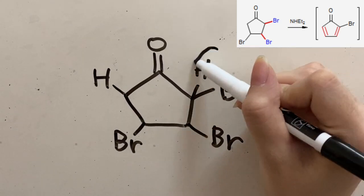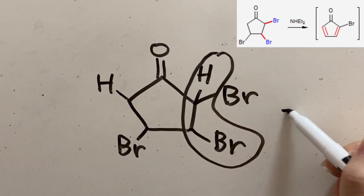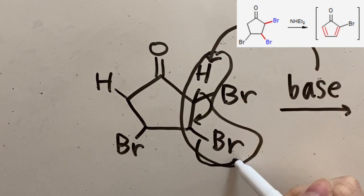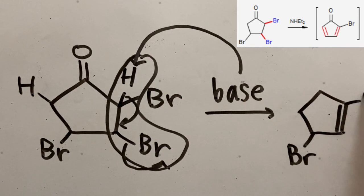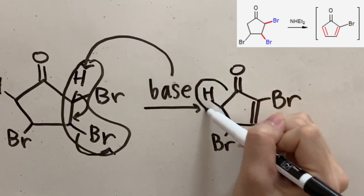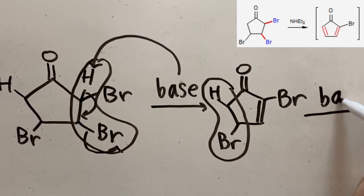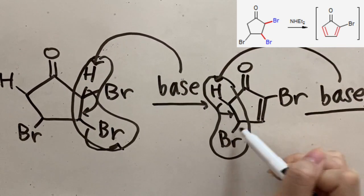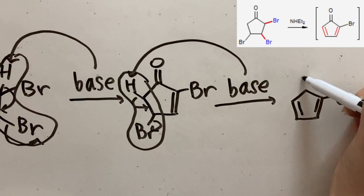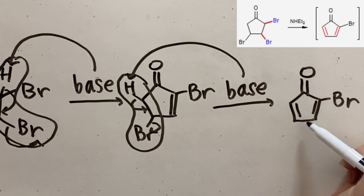Starting with the hydrogen halogen on the right, the base attacks the hydrogen, forms the alkene, and kicks the bromide out. The same happens to the hydrogen halogen on the left. The final product is a ring with two alkenes.